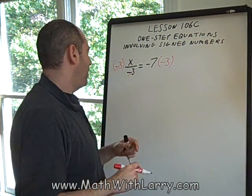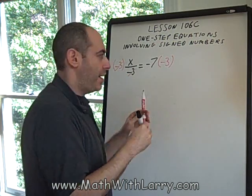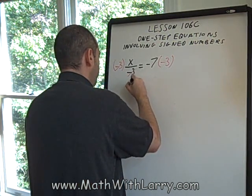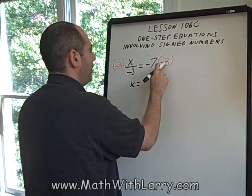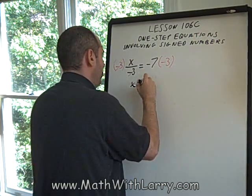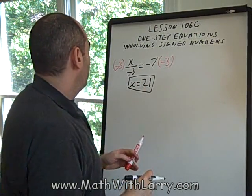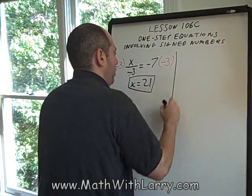That gives us the right to cancel it out with this. And remember, a negative divided by a negative is a positive. So, on the left, we're really just left with positive 1x, which is just x. Negative 7 times negative 3. A negative times a negative is a positive. You have to remember that. x equals 21.